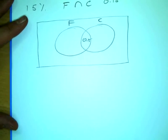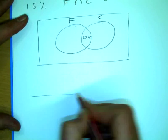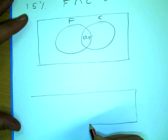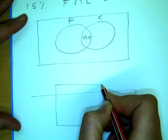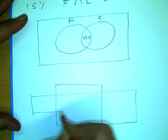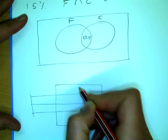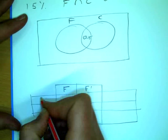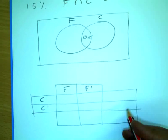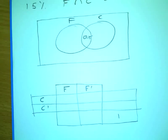So let's go and sketch up a Karnaugh map. I'm going to make that F, not F, C, not C.